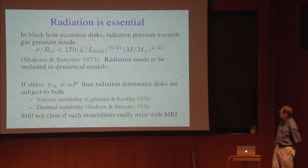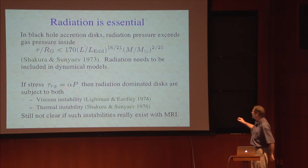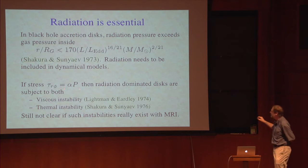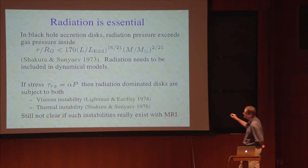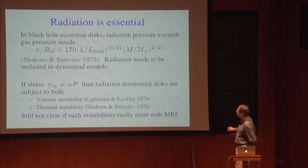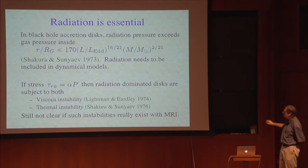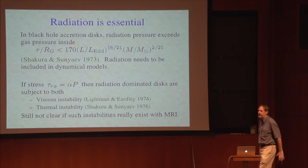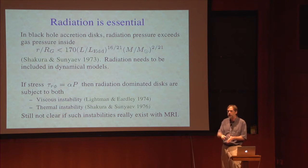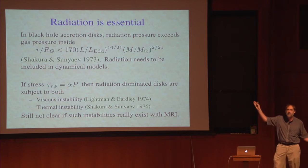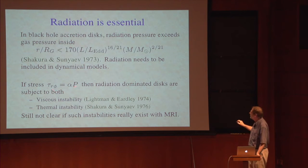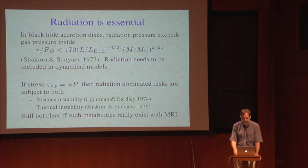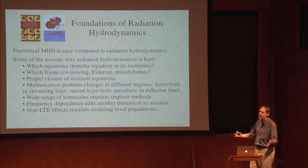This is only for accretion onto luminous sources. If you're talking about Sagittarius A* or very low luminosity AGN, radiation is not so important. There are also important theoretical questions about radiation discs — if the shear stress is just proportional to total pressure through some constant alpha, these discs would be viscously unstable and thermally unstable. But the shear stress is given by MHD turbulence, the MRI, and so we'd like to understand whether these instabilities exist with the MRI or not.